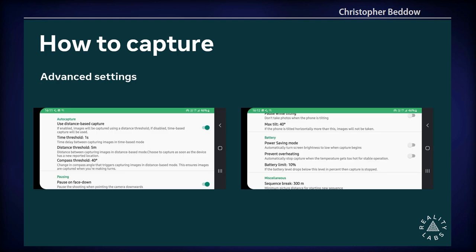In the settings, you can set the distance threshold, the time threshold, and also configure rotation-based capture — setting how many degrees of rotation trigger a new photo, essentially creating a sort of 360 experience. When you upload to Mapillary, we'll blend those photos into one another as you rotate the camera. You can also enable 'pause on face down,' a convenient way to quickly pause capture when you put the phone down and resume without hitting too many buttons.